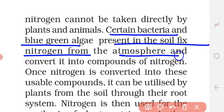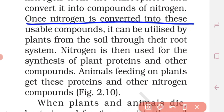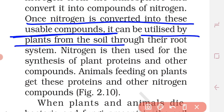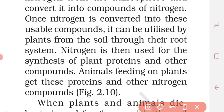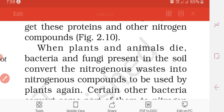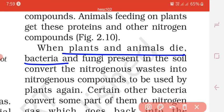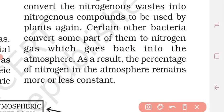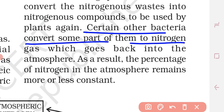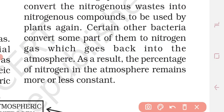Bacteria and blue-green algae fix nitrogen in the soil, converting atmospheric nitrogen into nitrogen compounds that plants can use. Animals feeding on plants obtain these proteins. When plants and animals die, bacteria and fungi convert nitrogenous waste back into nitrogen compounds for plants to use again, and other bacteria convert it back to nitrogen gas, returning it to the atmosphere. As a result, the percentage of nitrogen in the atmosphere remains constant.